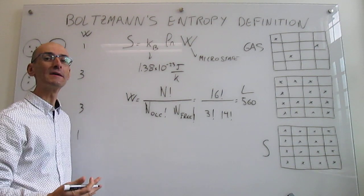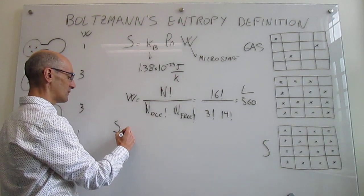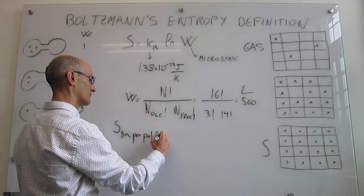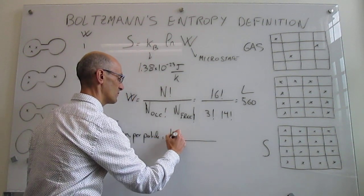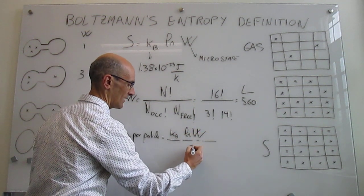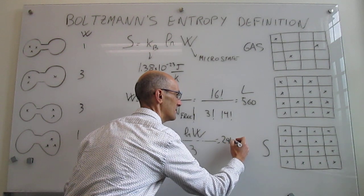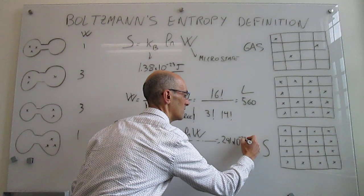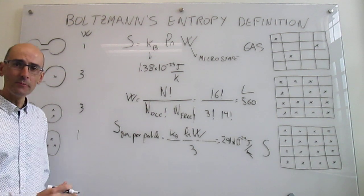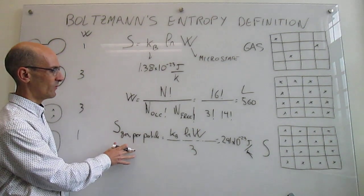We calculate the entropy on a per-particle basis since that's an intensive quantity. The entropy of the gas per particle equals k_b times ln(560) divided by 3 particles, which equals 2.91 × 10⁻²³ joules per Kelvin. We can then proceed and do the same thing for the liquid and the solid to compare their entropy per particle.